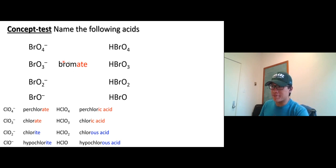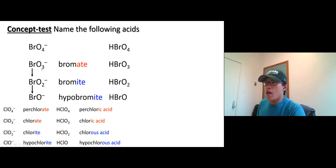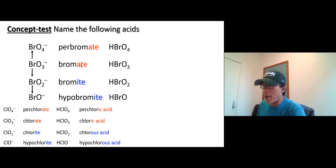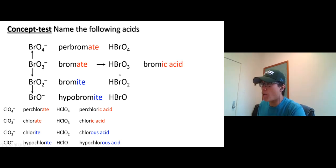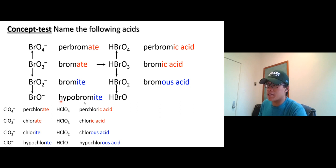The same pattern applies to bromine. Starting from bromate: going down one oxygen gives bromite, going further down gives hypobromite, and going up gives perbromate. Bromate as an acid is bromic acid, perbromate becomes perbromic acid — just add 'per.' Going down, bromite becomes bromous acid, and hypobromite becomes hypobromous acid.